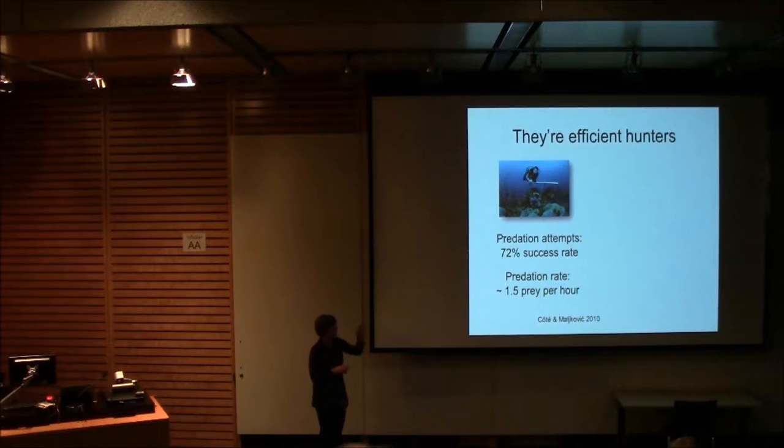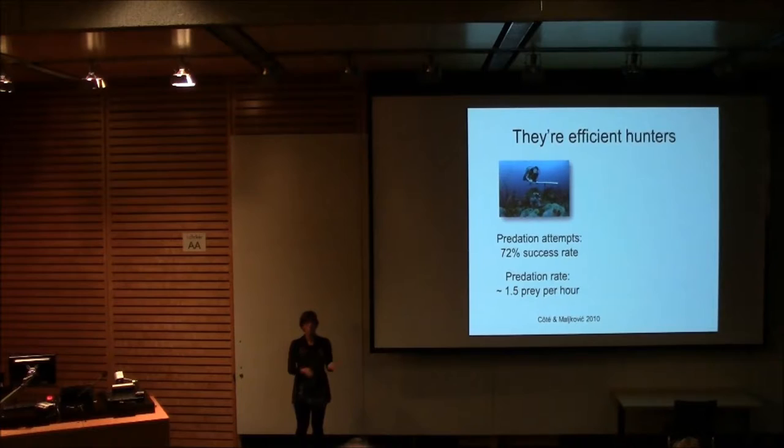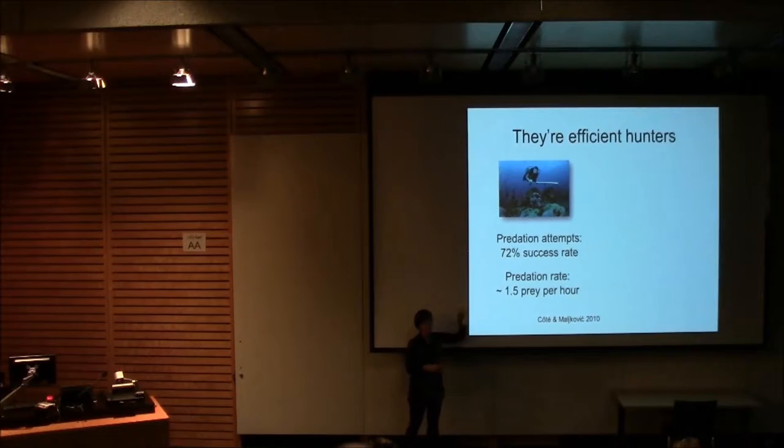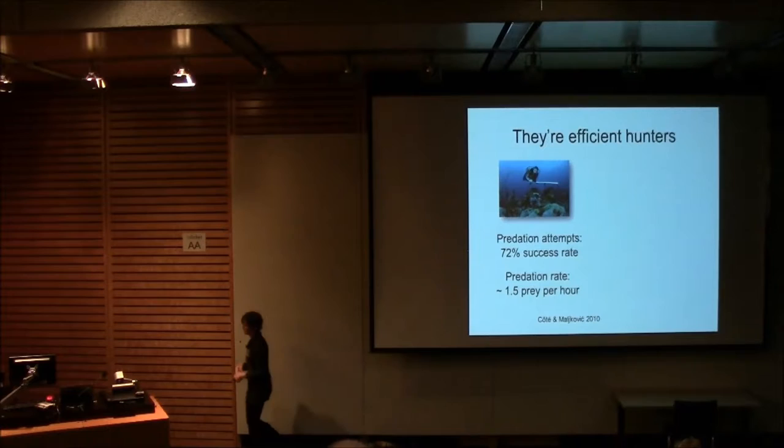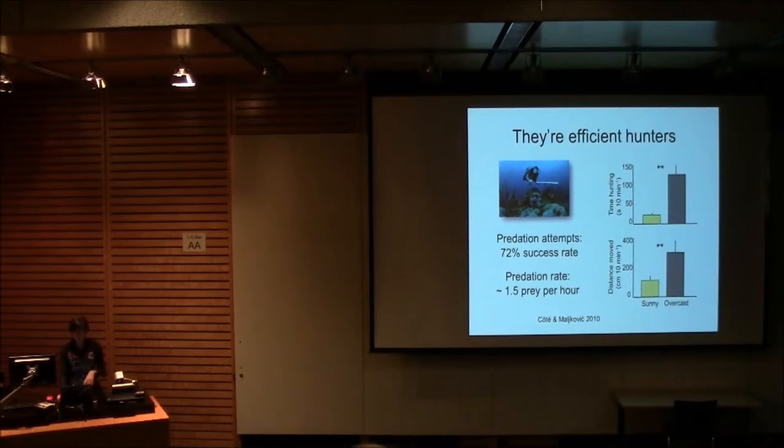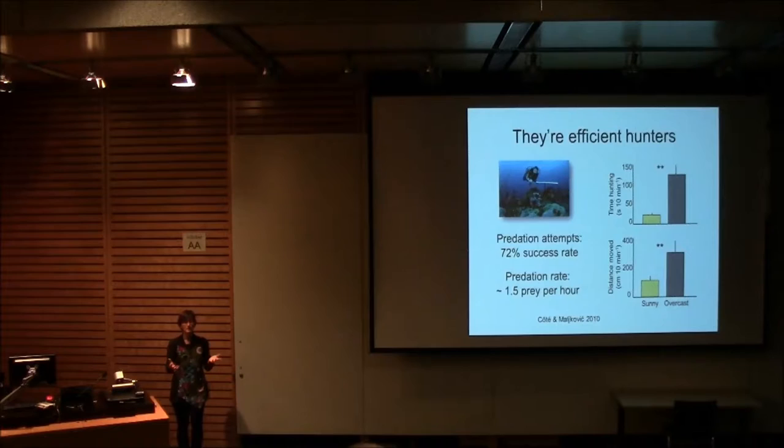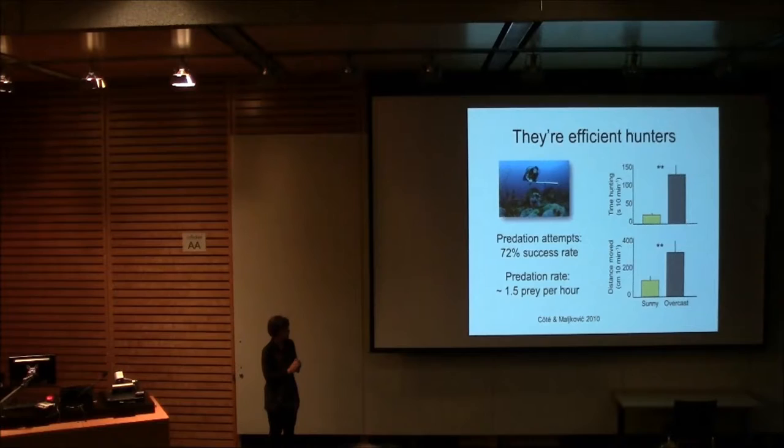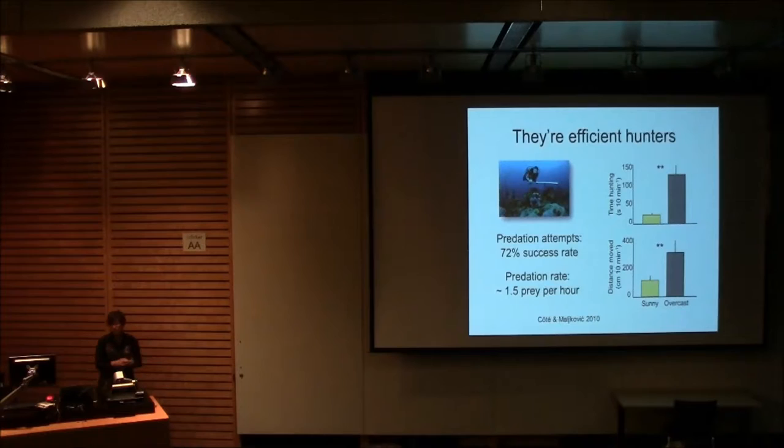You just don't see predation in the wild unless you're watching lionfish. Then you see lots of predation in the wild. So in many, many hours of watching lionfish, we were able to quantify how successful they are. So on the whole, three quarters roughly of their predation attempts are successful. And we were actually able to quantify a predation rate of about 1.5 prey per hour. This is actually huge. We discovered all sorts of quirky things as well about their behavior, such as the fact that they really don't like hunting when it's sunny.